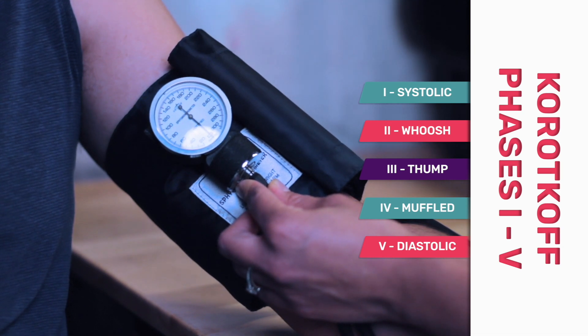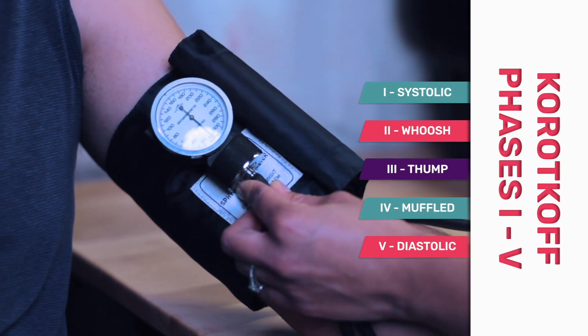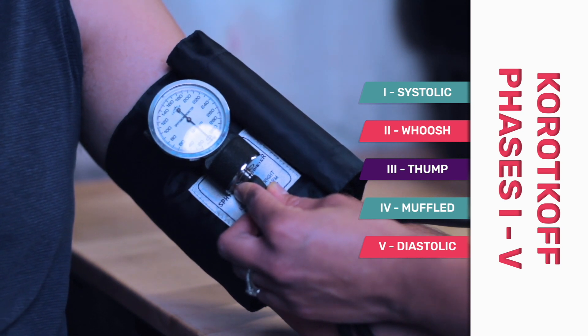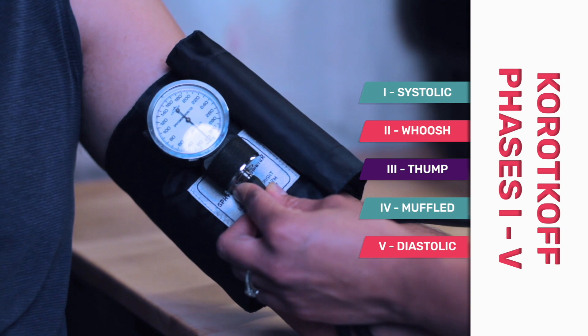And then in addition to that, phase two would be the whoosh, phase three would be the thump, and phase four would be a muffled sound. With phase five is silence. So that would be your diastolic.